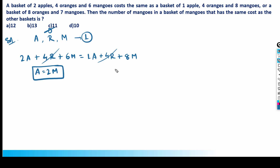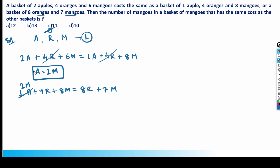It is also given that the basket cost is the same as eight oranges plus seven mangoes. Let's equate: one apple plus four oranges plus eight mangoes equals eight oranges plus seven mangoes. Now substituting a = 2m, we get 2m plus four oranges plus eight mangoes equals eight oranges plus seven mangoes.